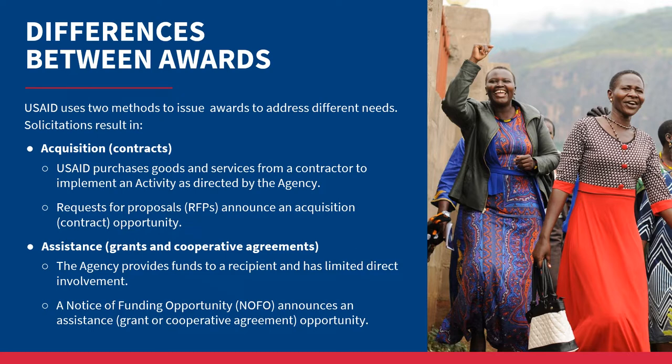Assistance awards result in grants and cooperative agreements. In this type of award, the agency provides funds to a recipient and has limited direct involvement. Assistance means helping with a program for the public good. With this type of award, the U.S. government is a financial supporter, not a buyer.